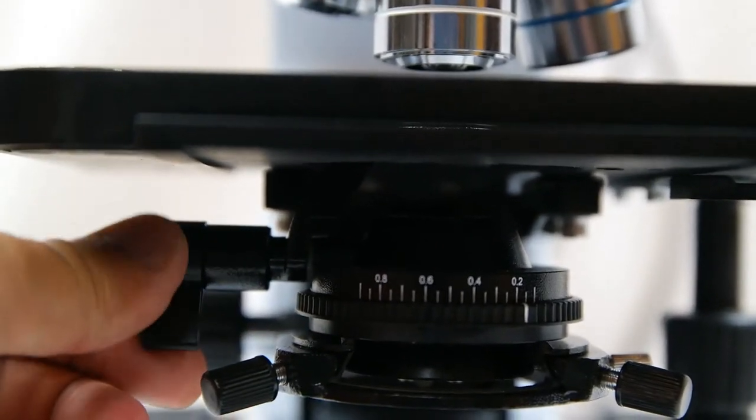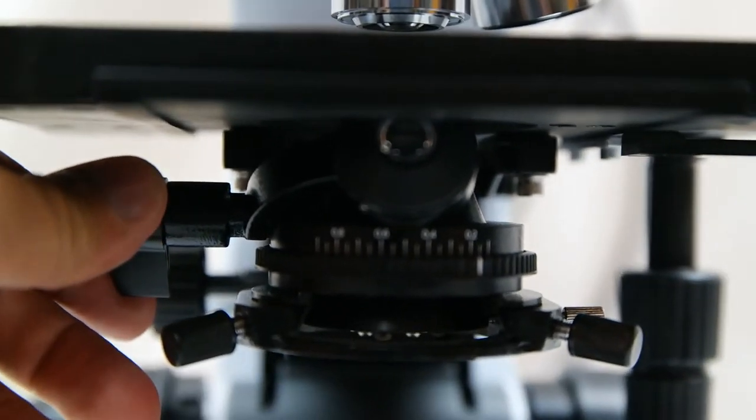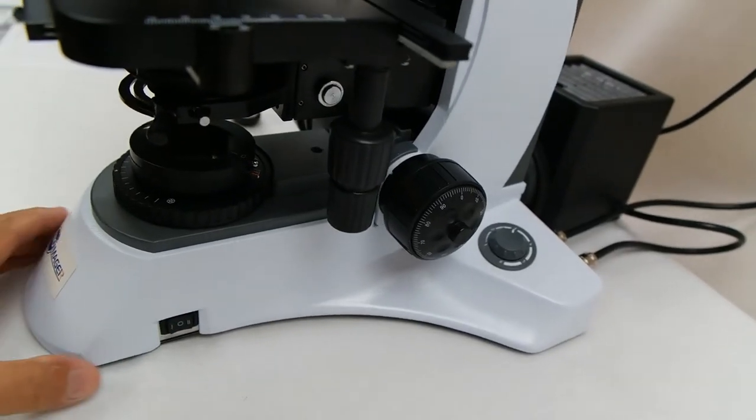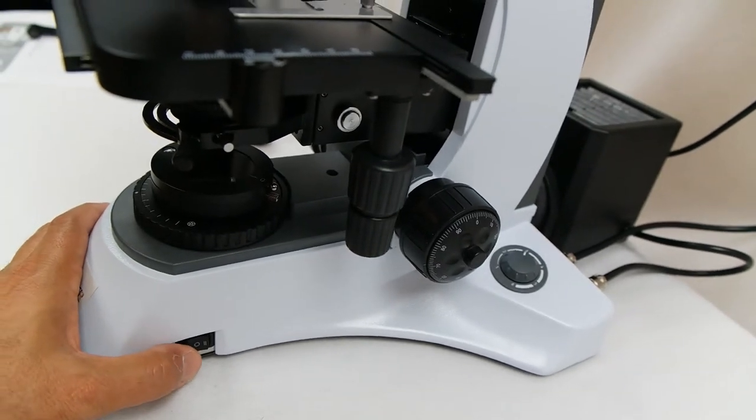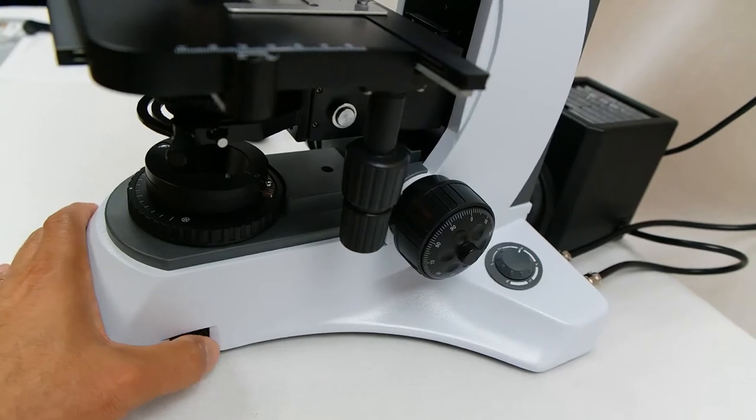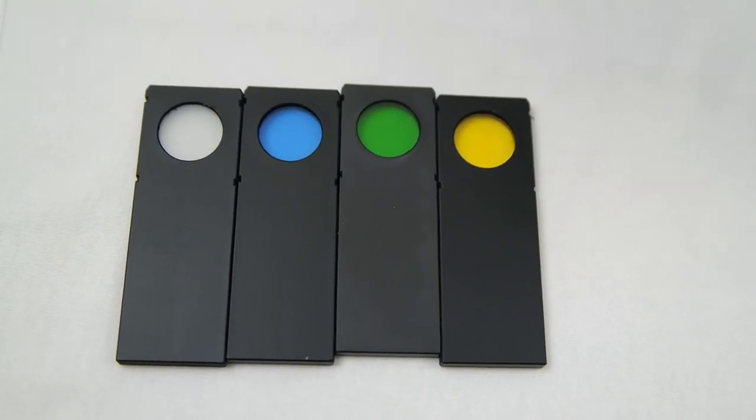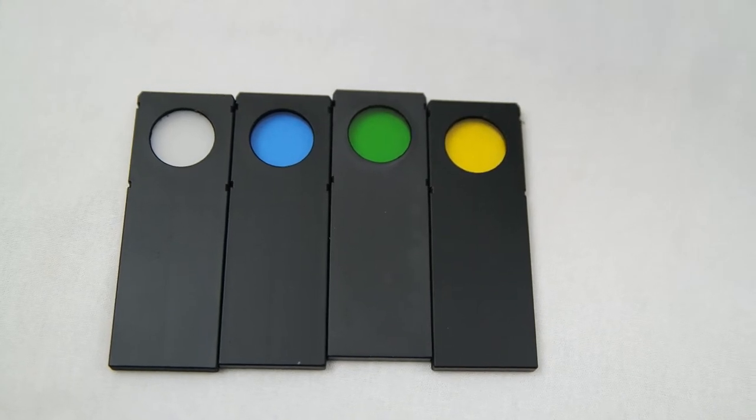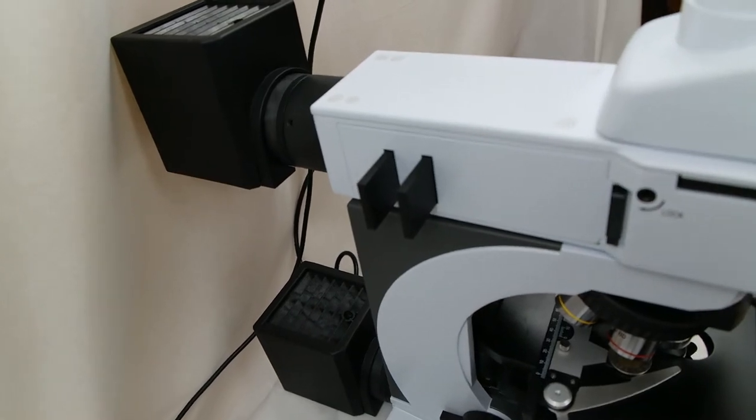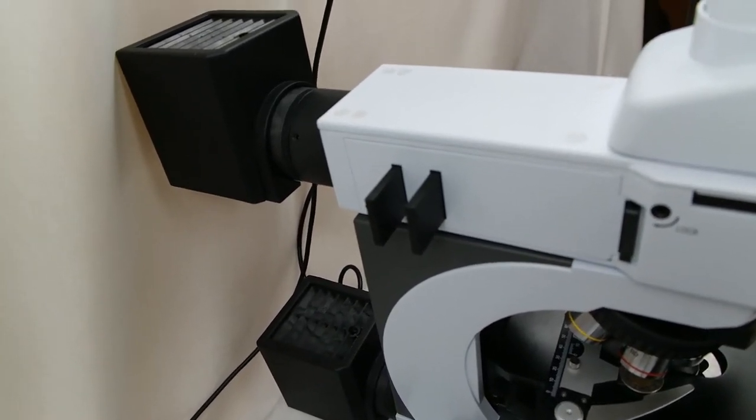This microscope comes with a swing-out condenser with numerical aperture of 0.9. You can turn on each light source separately for reflected light or transmitted light. With this microscope you get color filters and neutral density filters of ND6 and ND25. You can use one or two filters for the reflected light.